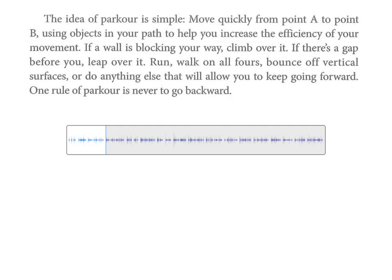第二段听力：The idea of parkour is simple — move quickly from point A to point B using objects in your path to help you increase the efficiency of your movement. If a wall is blocking your way, climb over it. If there's a gap before you, leap over it. Run, walk on all fours, bounce off vertical surfaces, or do anything else that will allow you to keep going forward. One rule of parkour is never to go backward.